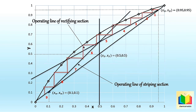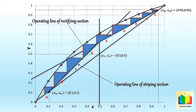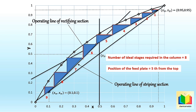The next step is to find the position of the feed plate. We can see that the intersection point of the rectifying section operating line and the stripping section operating line lies on the fifth triangle. Hence, the position of the feed plate is fifth from the top. So in this example, the number of ideal plates is 8, and the position of the feed plate is fifth from the top. This is how we calculate the number of ideal plates and feed plate position using the McCabe-Thiele method.